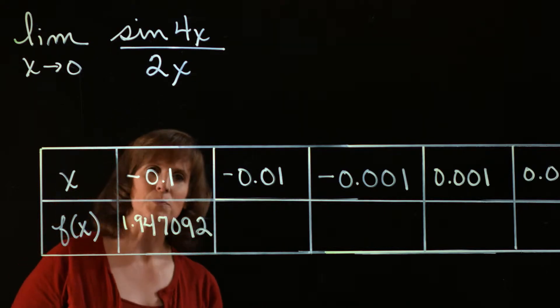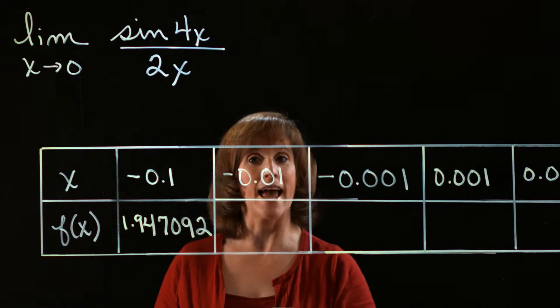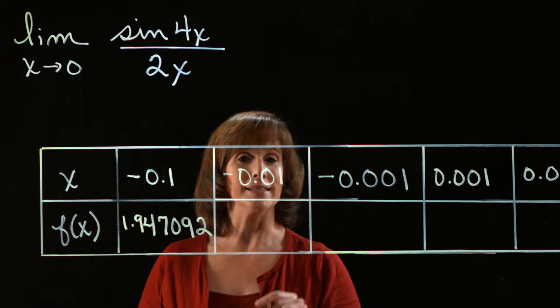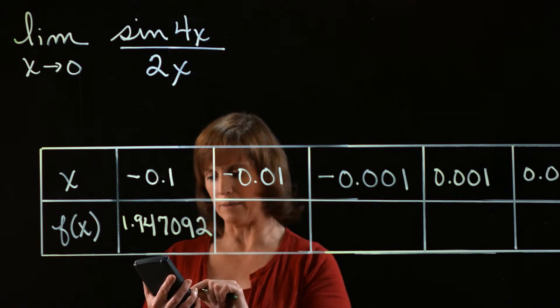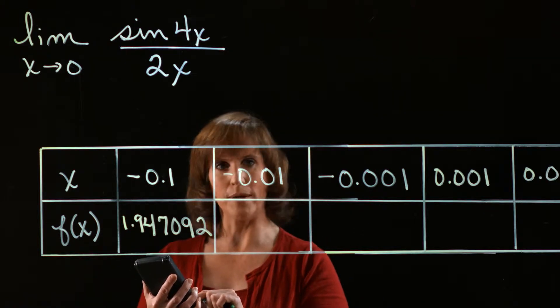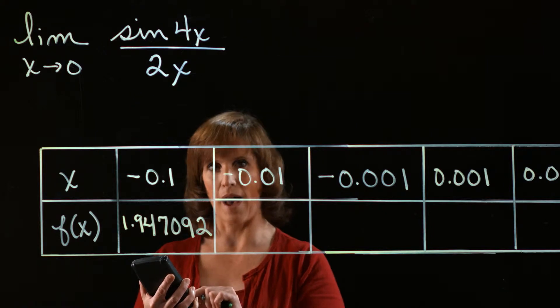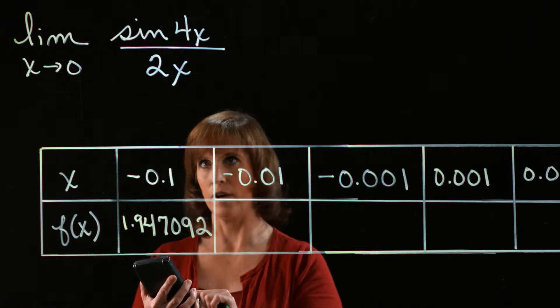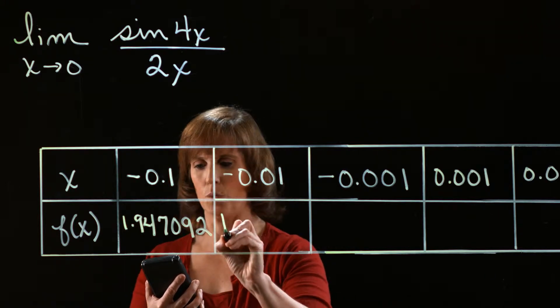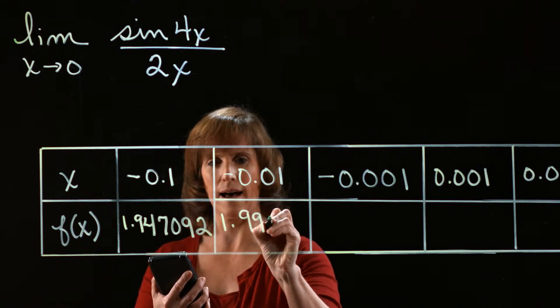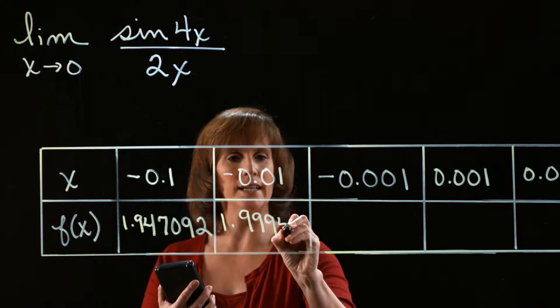Now I'm going to repeat this process, only this time I'm going to plug in negative 0.01. So I've got the sine of 4 times negative 0.01 divided by 2 times negative 0.01. And my result is 1.999467.